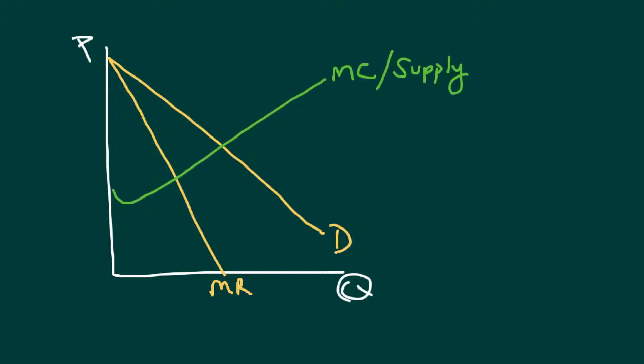We have here a line drawn called marginal cost slash supply. And the reason I did that is if we think back to perfect competition, the firm marginal cost curve determines their quantity for each firm that they're going to profit maximize at. And then you add all that up, and you actually find out what quantity each firm is willing to supply at each price. So really, the marginal cost and supply curve are the same.